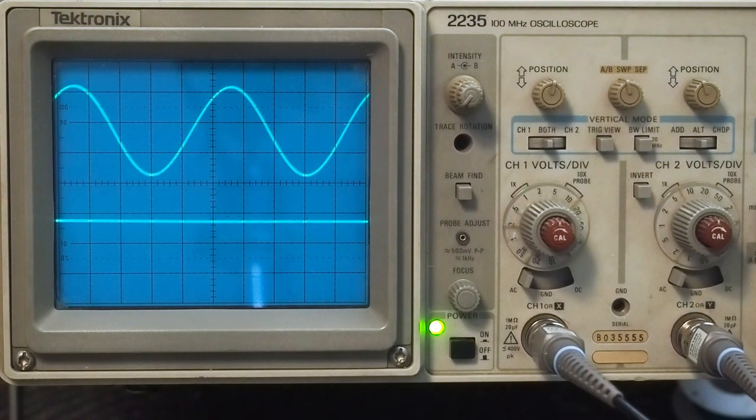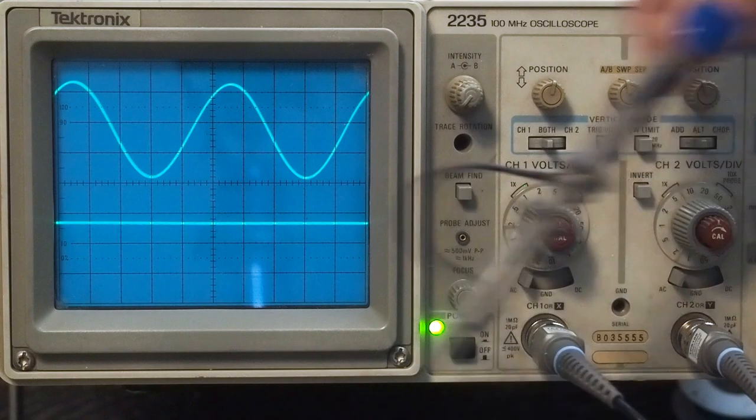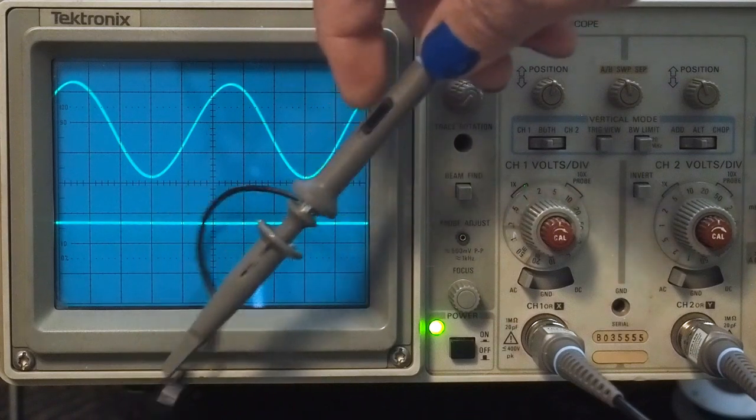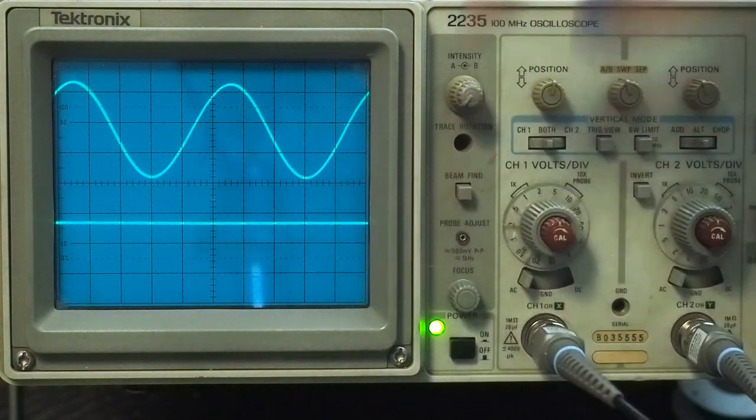The next test is we're going to look at the voltage swing at the grid of the 300B tube. We do this by switching the probe to 10x multiplier. This is going to be on the cascode. Leaving this on 5 volts per division, on the 10x probe it shows 50 volts, so we're seeing 50 volts per division.